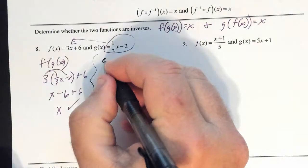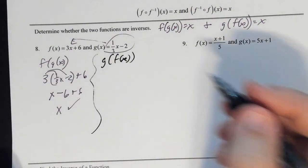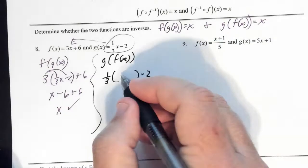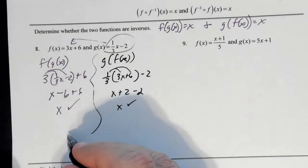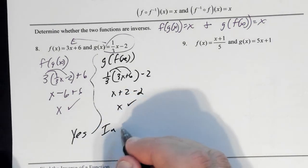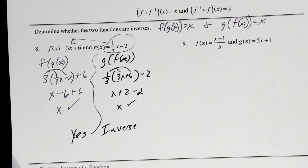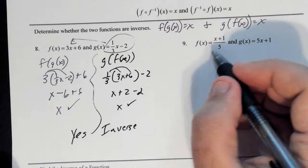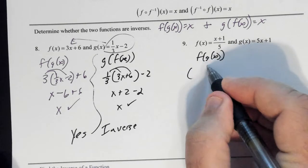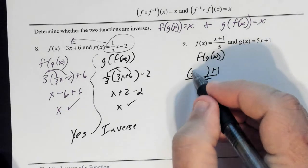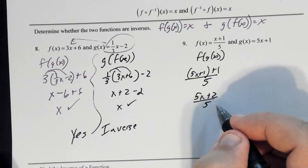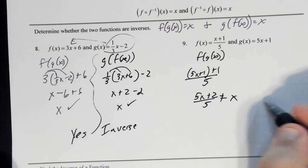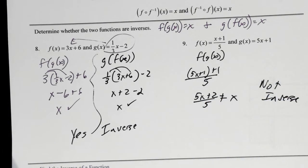You also have to do g(f(x)): put the f function inside g, distribute, and get x + 2 − 2 = x. Since both compositions equal x, these functions are inverses. For number 9, doing f(g(x)) gives 5·((x+1)/5) + 2/(5), which does not simplify to x — so these are not inverses. Once you get a 'no,' you have your answer.